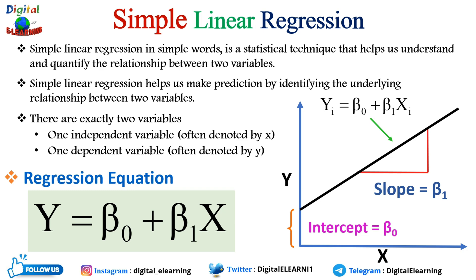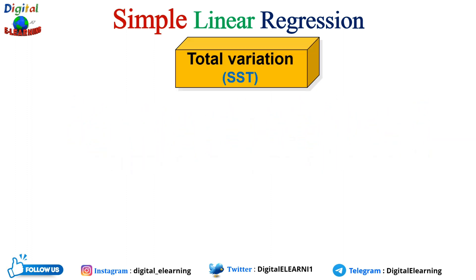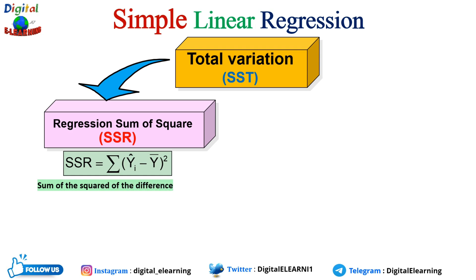Now let us look at the different sources of variation. Total variation, SST, comprises two components. The first is the regression sum of squares, SSR, which quantifies the variation due to the relationship between the independent and dependent variables x and y — also known as explained variation. The formula for SSR is: SSR = Σ(ŷᵢ − ȳ)², the sum of squared differences between the predicted y value using the regression equation and the mean value of y.